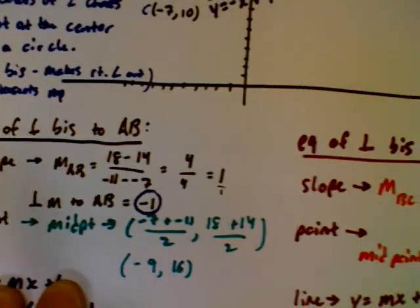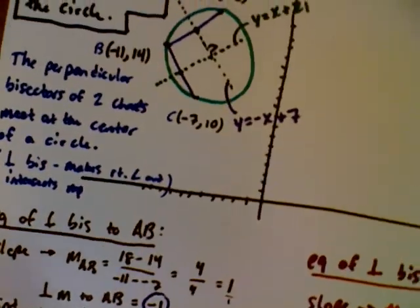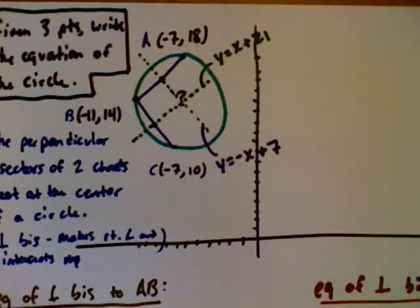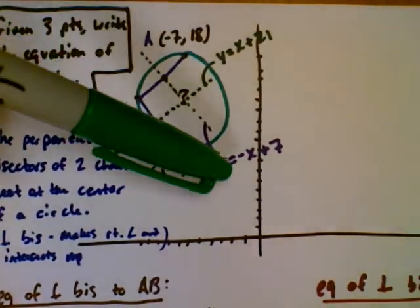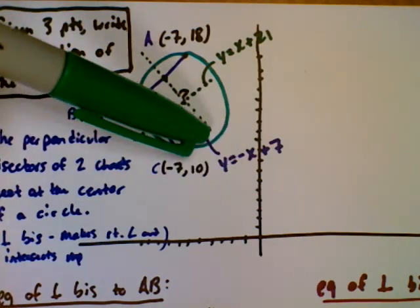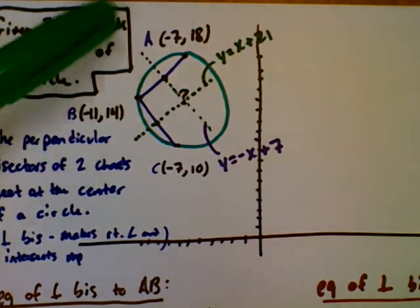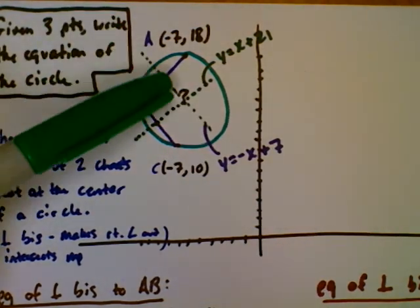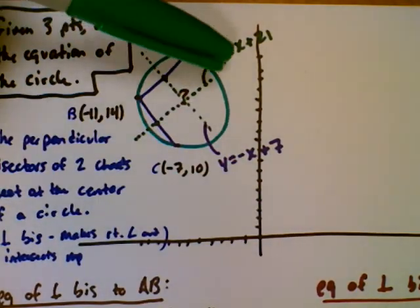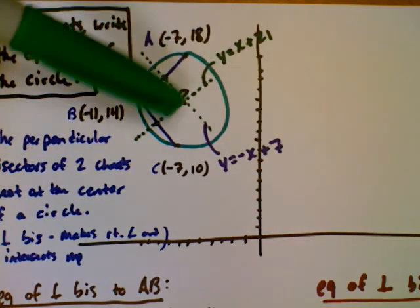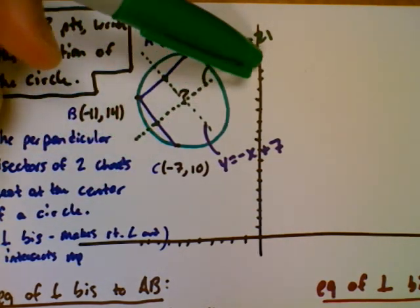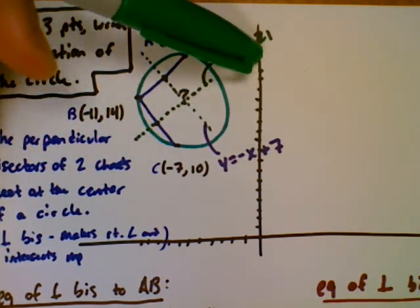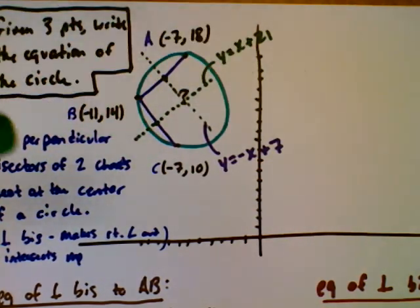Looking at the picture, I've labeled both lines: y equals negative x plus 7 has a negative slope, going down — that makes sense. And y equals x plus 21 has a positive slope going up, with a y-intercept near 21. So both equations check out visually.